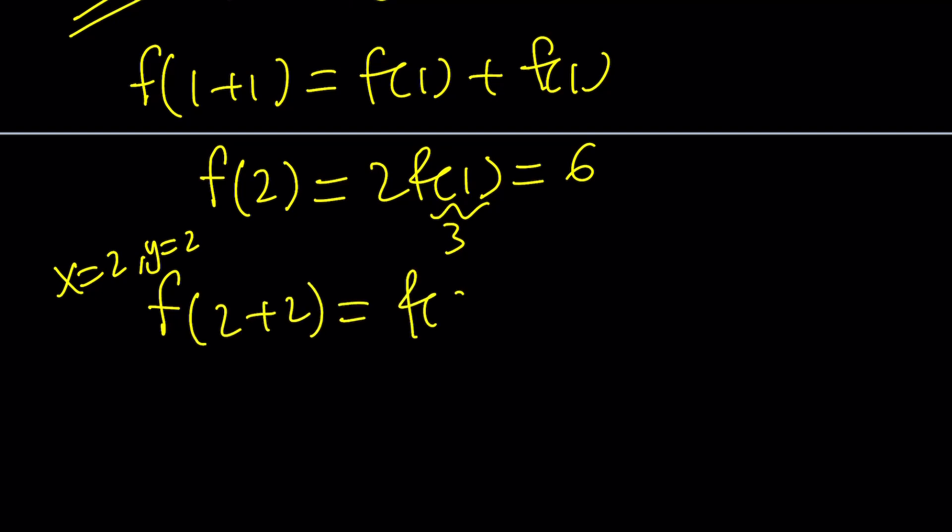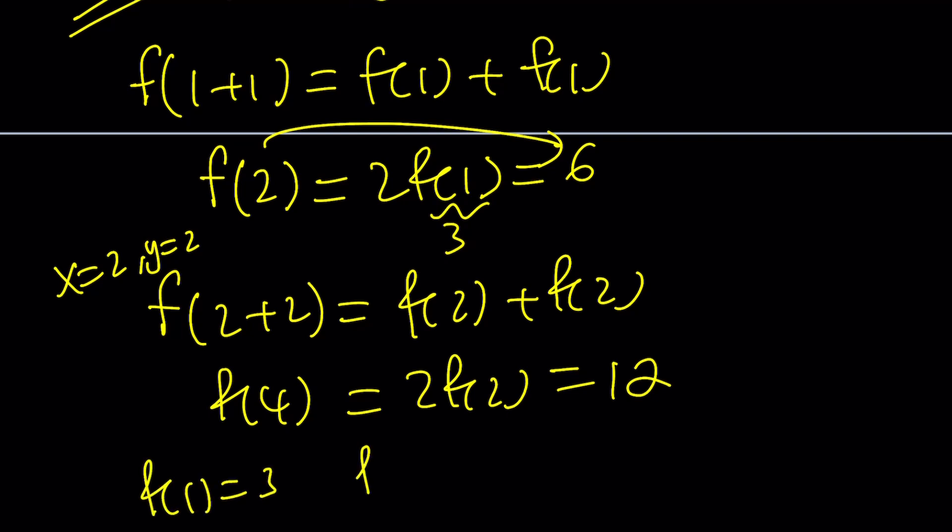Let's go ahead and find f of 4 from here. To find f of 4, we're going to replace x with 2 and y with 2. So f of 4 is 2 f of 2. But we just found that f of 2 is equal to 6, so f of 4 is just going to be 12. We can kind of come up with a pattern here.